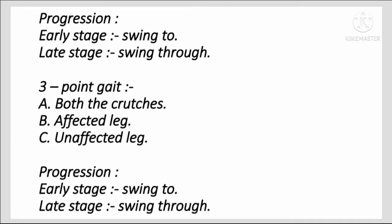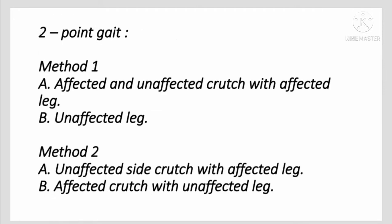Progression for partial weight bearing: early stage uses swing-to gait, late stage uses swing-through gait pattern — both crutches together, then affected leg, then unaffected leg. 2-Point Gait has two methods. Method 1: affected and unaffected crutch with affected leg, then unaffected leg. Method 2: unaffected side crutch with affected leg, then affected crutch with unaffected leg.